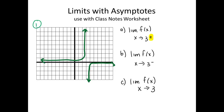I'm going to start by approaching from the right hand side. This plus sign means from the right side. So if I go to my farthest right spot on the graph and I trace the graph, I end up heading down. This leads us down to negative infinity.